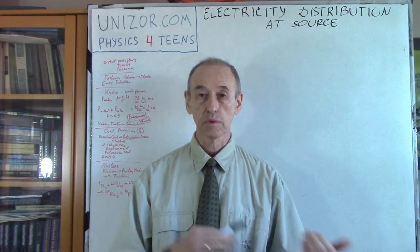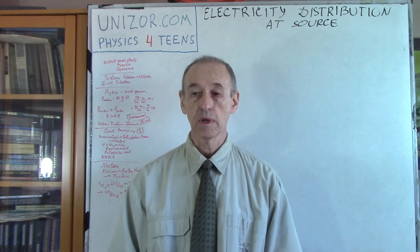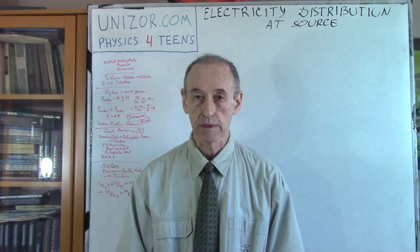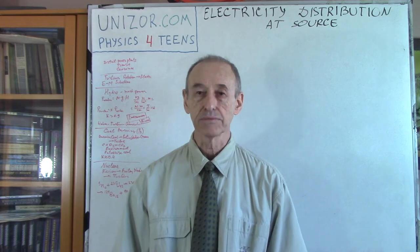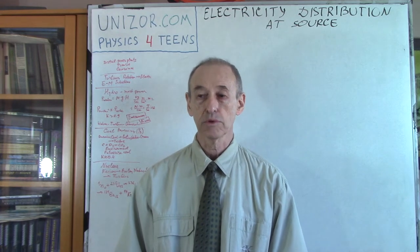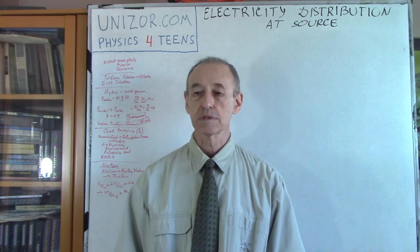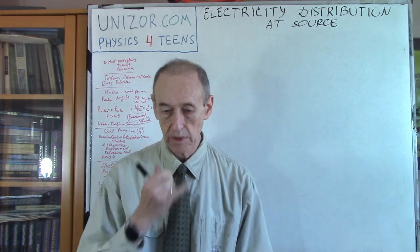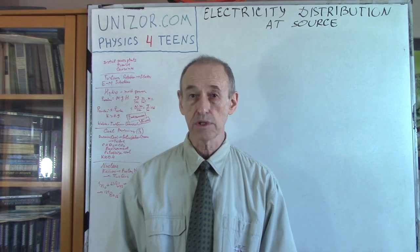Now we will talk about different ways to produce electricity from energy sources we have right now. Since the whole series is about distribution of electricity, we will talk primarily about massive production of electric energy on electric power plants — not about little batteries. There's no problem distributing electricity from a battery to a flashlight lamp. We're talking about real commercial production of electricity and how it's distributed.